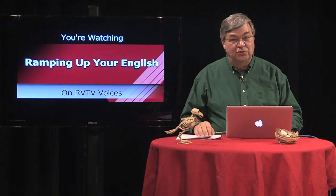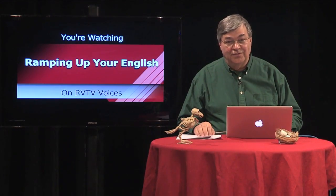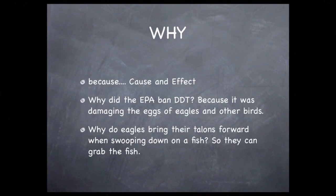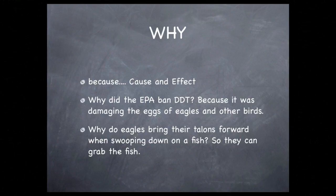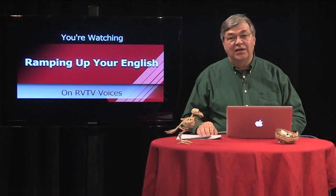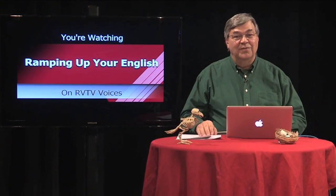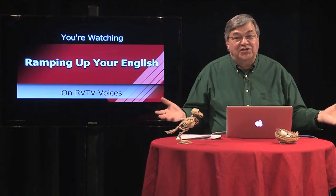Now, if you've chosen eagles as your report subject, you'll find a very interesting answer to that question. Now we come to the last and most troublesome interrogative: why. The simple answer to the question why is because. As we see, the answer to why has to do with cause and effect. Why did the EPA ban DDT? Because it was damaging the eggs of eagles and other birds. The other answer to why is so — why do eagles bring their talons forward when swooping down on a fish? So they can grab the fish. The interrogative why can be used for many requirements of the report, from their range to their life cycles, their adaptations, conservation status, and more.